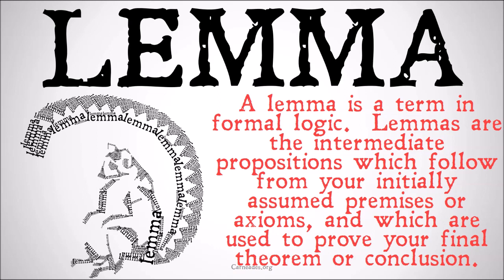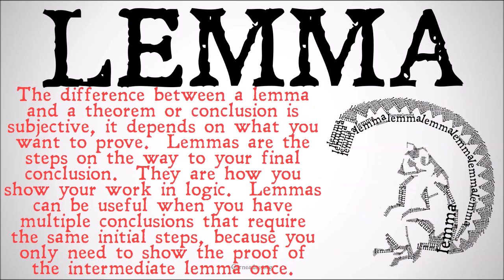So lemmas are the things in between your axioms and your conclusion or theorems. The difference between a lemma and a theorem or conclusion is somewhat subjective because it depends on what you're trying to prove. One person's theorem may be another person's lemma on the way to another theorem. Lemmas are the steps on the way to your final conclusion — they're kind of how you show your work in logic.